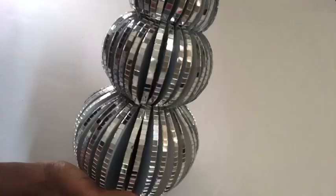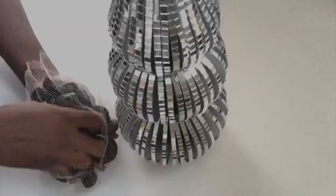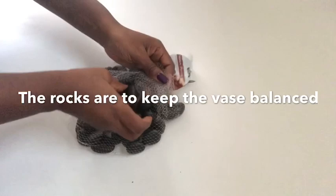I did this all around. I continued to do this with a hot glue gun. This is what it looks like and it's so shiny and so pretty. I got rocks from the Dollar Tree and that's what I'm going to be putting inside of the vase to make sure that it stays balanced.